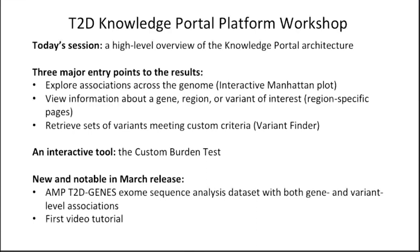I'll talk briefly about three major entry points to the results. Why would you want to get into the portals? You might be interested in a disease or trait and want to explore the genetic landscape for that trait — see associations across the genome — and you can do that with our interactive Manhattan plot. You might come in with prior knowledge about a gene, region, or variant of interest, maybe from a model organism result or wet lab results. You can also use our variant finder tool to retrieve sets of variants meeting custom criteria — for example, variants that influence both T2D and BMI, or T2D and cardiovascular disease.